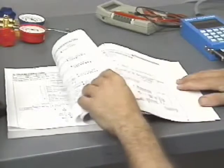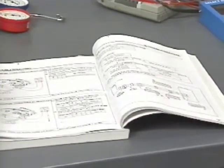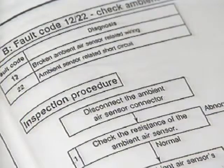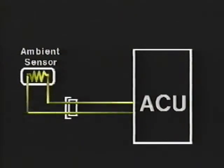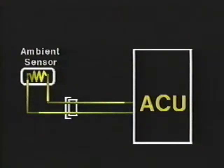The service manual describes each of the codes. Remember, diagnostic fault codes can only lead the technician to the general area of the problem. For example, fault code 12 indicates an open ambient sensor circuit. The fault could be within the sensor, at the sensor connector, anywhere along the wire harness, at the ACU connector, or within the ACU.